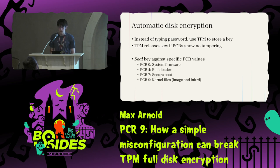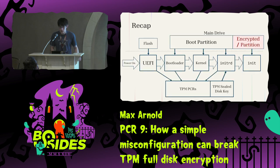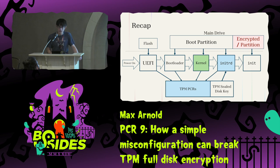There are a number of predefined PCR values — I've selected a few of the most important ones. Most significantly, PCR9 is a measurement of the kernel files like the image and the initRD. Here's the whole system recapped with the TPM added. We power on, measure the UEFI into the TPM, the UEFI runs and measures the bootloader, the bootloader runs and measures the kernel, the kernel runs and measures the RD. Now the TPM has all of these measurements. The initRD requests the disk key, and since all measurements look good the TPM releases it. Then the initRD decrypts the root partition and we continue booting normally.